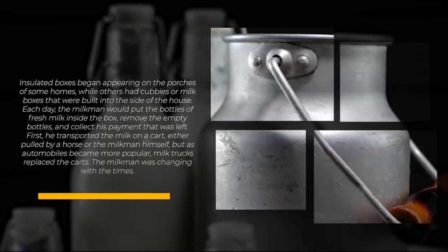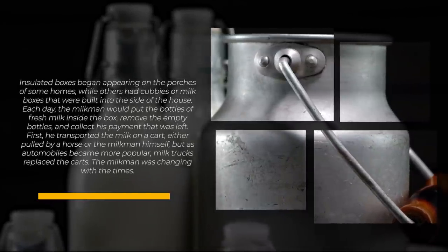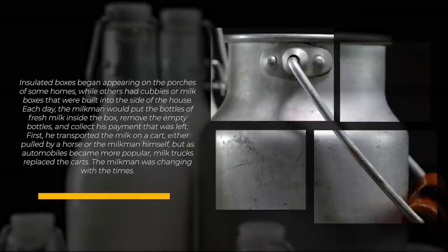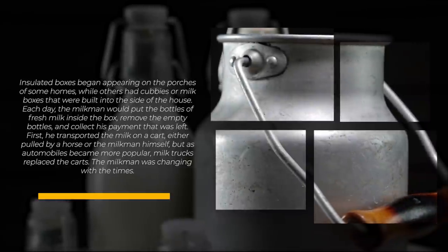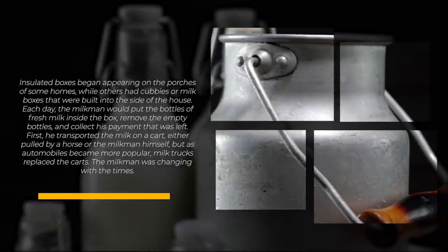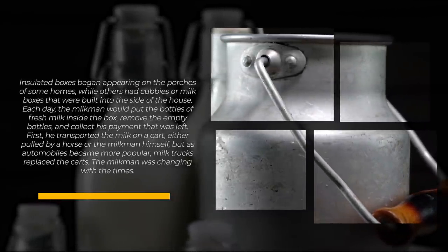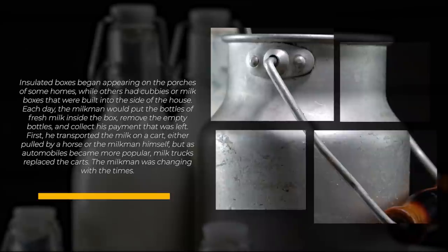Insulated boxes began appearing on the porches of some homes, while others had cubbies or milk boxes that were built into the side of their house. Each day the milkman would put the bottles of fresh milk inside the box, remove the empty bottles, and collect his payment that was left.